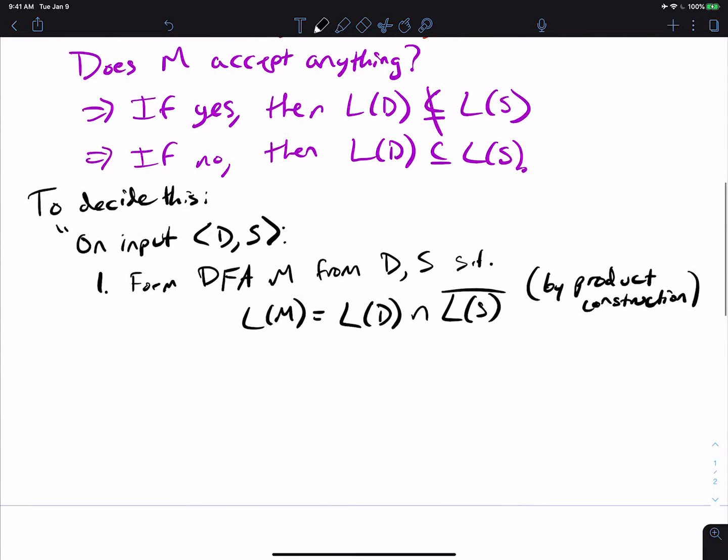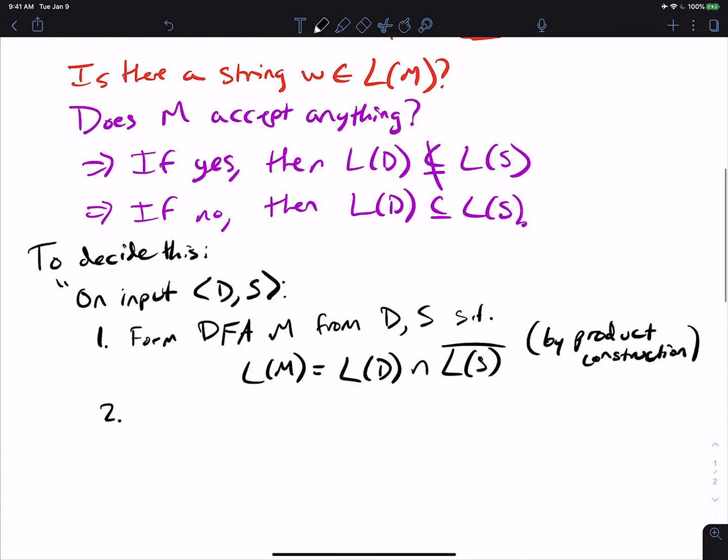And then what we do is, well, we know because we can, we will be showing this in an upcoming video at some point, that E DFA is decidable. So recall that E DFA is given a DFA is its language empty. And what you do in a nutshell is you just run breadth first search on the DFA from the start state.